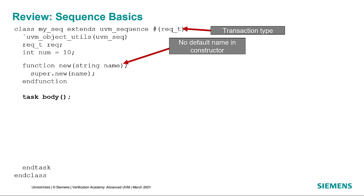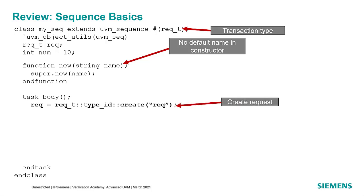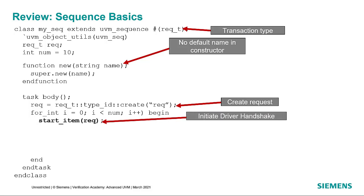Looking at the basics of a sequence, we have a base type called uvm_sequence parameterized by the type of transaction it executes. By default it can do a request and a response of the same type. We register the sequence with the factory using the object_utils macro. We define the transaction type we're going to generate, then define the constructor. Note that we do not provide a default name in the constructor, since good coding practice dictates that the sequence will always be given a name when it is created.